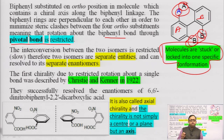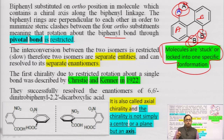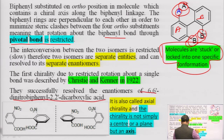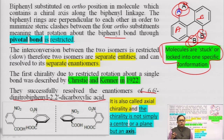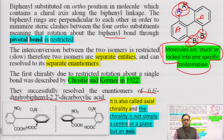This phenomenon was first observed in 1922 by Christie and Kenner, who separated 6,6′-dinitrodiphenyl-2,2′-dicarboxylic acid. They separated this molecule, and it is amazing to know that they achieved this separation before the term atropisomers even existed. Due to the substituents at the ortho position, we get different types of rotamers — and these rotamers are not called conformational isomers, we call them atropisomers.